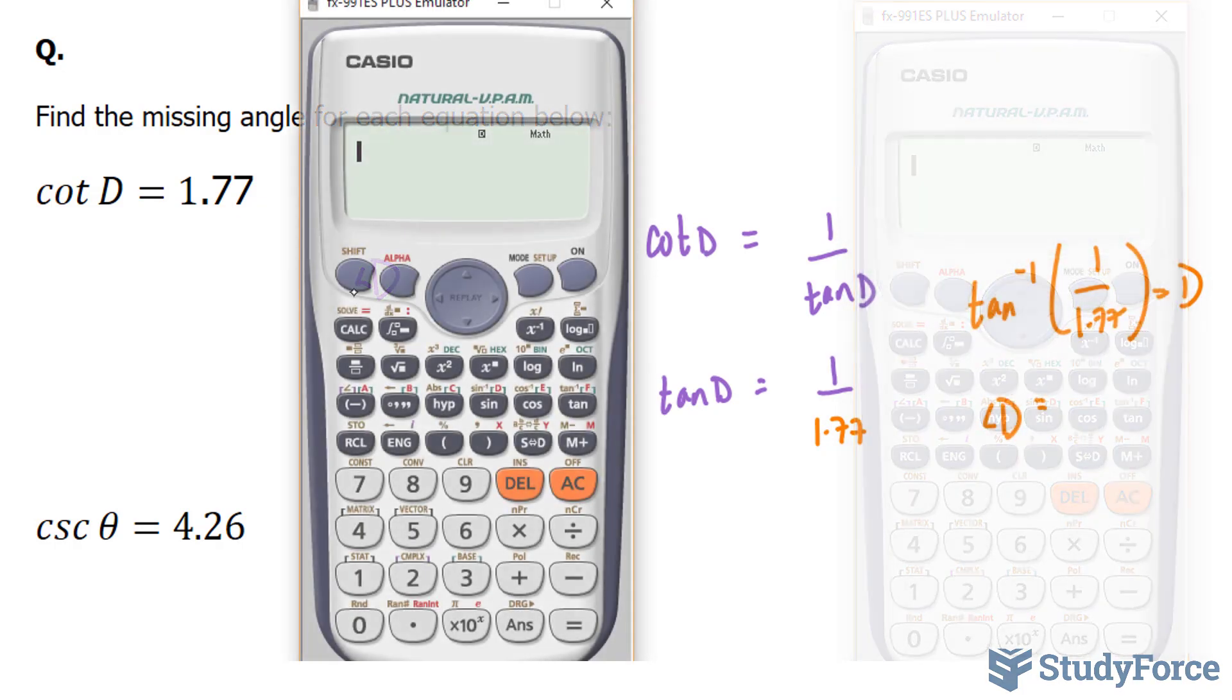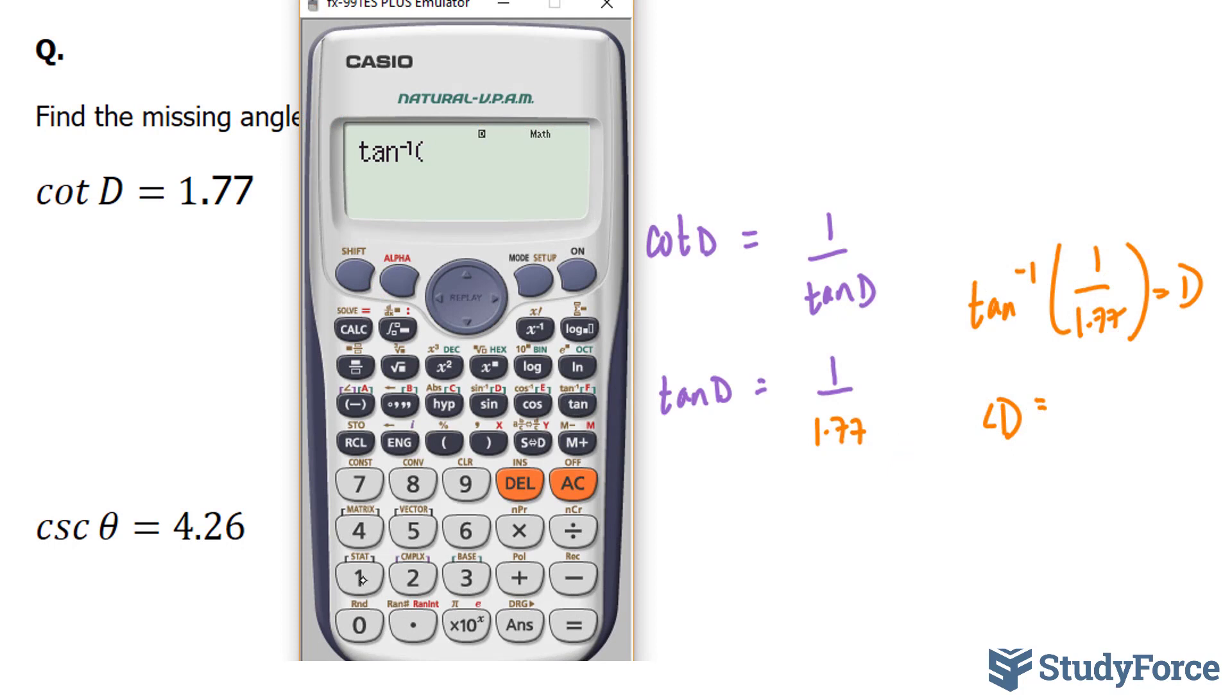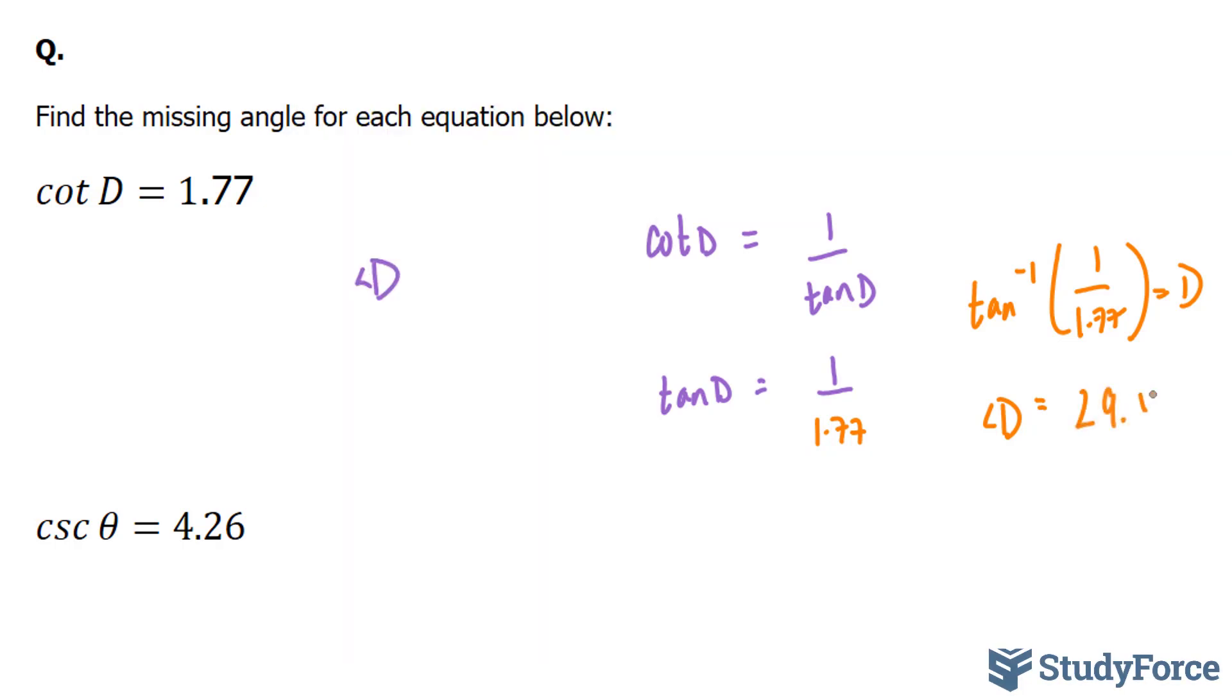It is equal to 29.46. Now if we keep in mind significant digits, this would be 29.5 degrees. Now it's not stated here, but the question wants you to find all the angles in degrees. If it was in radians, you'd have to change your mode on the calculator into radians.